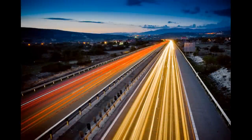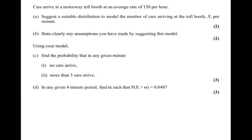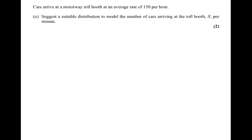Question 6 from the January 2011 paper is about cars passing a toll booth on a motorway. Cars arrive at an average rate of 150 per hour, and we need a suitable distribution for the number of cars arriving in one minute. This is a Poisson distribution. Lambda equals 150 divided by 60, which is 2.5, so X has the Poisson distribution with parameter 2.5.